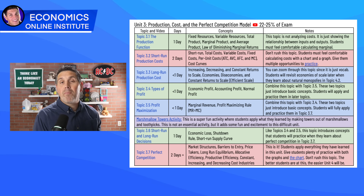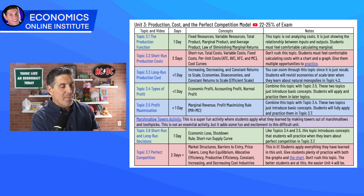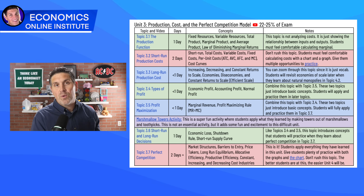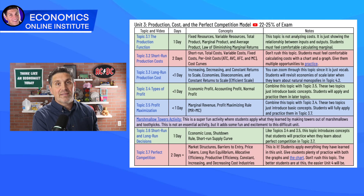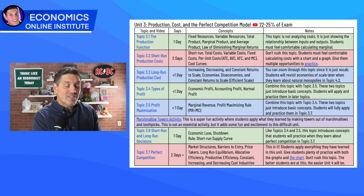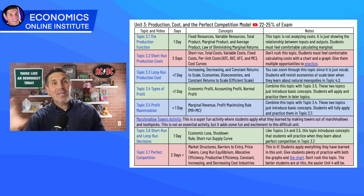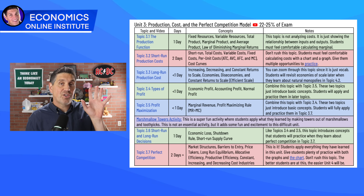There's an activity you can do called Marshmallow Towers — it's super fun. Students apply the profit-maximizing rule by running a business making a tower, looking at their fixed and variable costs. Topic 3.7 — perfect competition — is really where everything comes together. It says two-plus days: probably a day to learn, another day to finish up learning side-by-side graphs, and then another full day of practice. Students need to be able to draw both the graph and use the profit-maximizing rule using a chart. Make sure to slow down here, because the better they understand these concepts, the better they'll do in Unit 4.